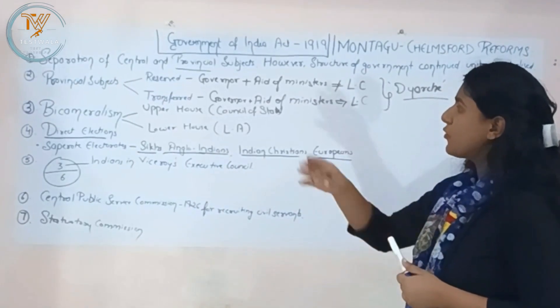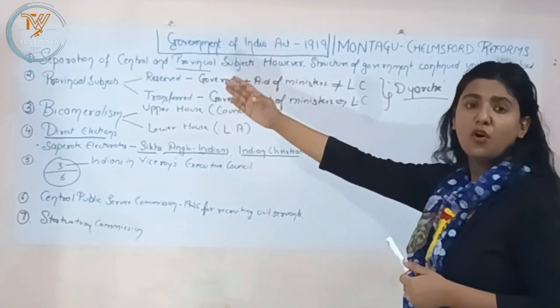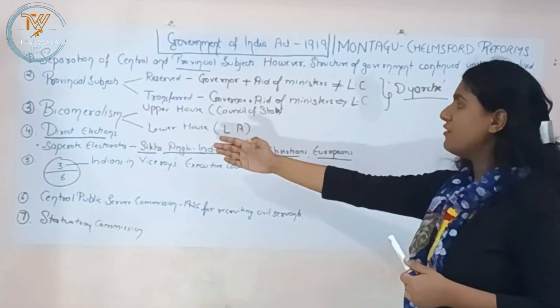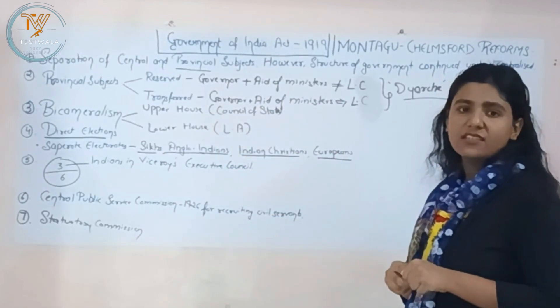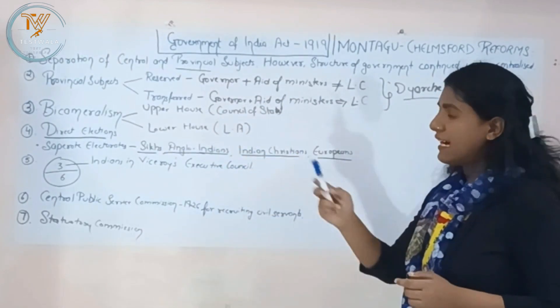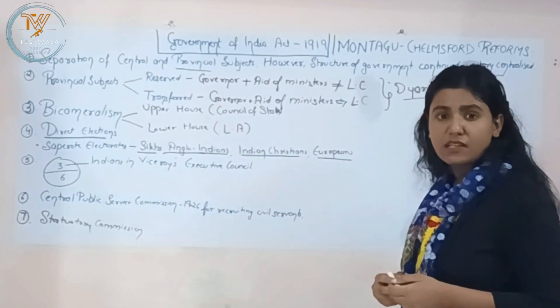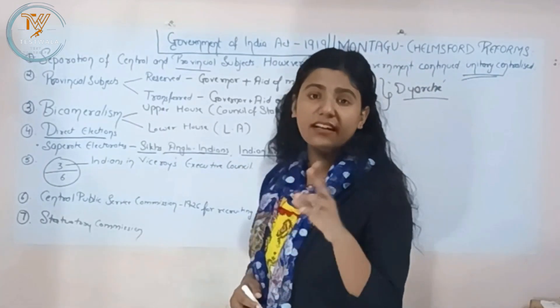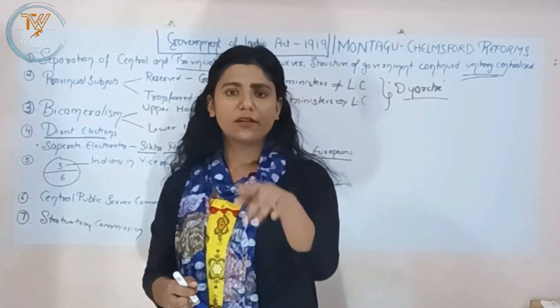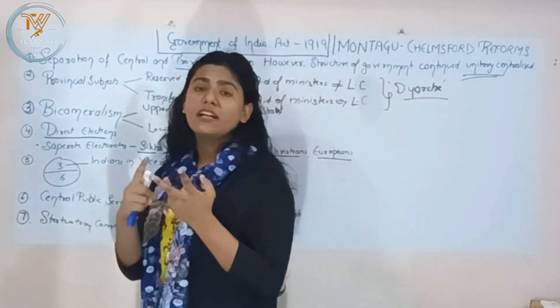After that, the provincial subjects were divided into reserved and transferred subjects. The concept of Dyarchy and separate electorates were also provided, covering Sikhs, Anglo-Indians, Indian Christians, and Europeans.